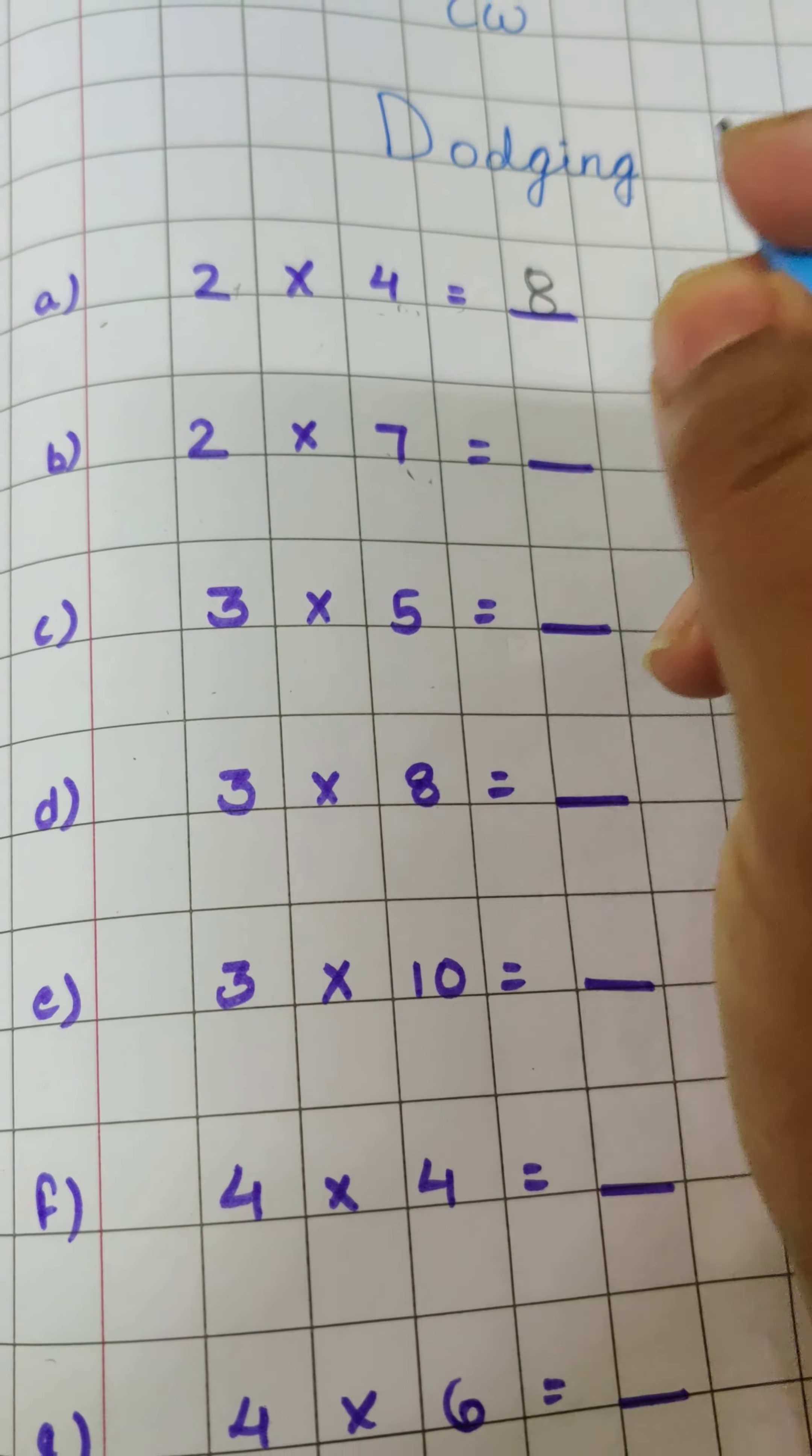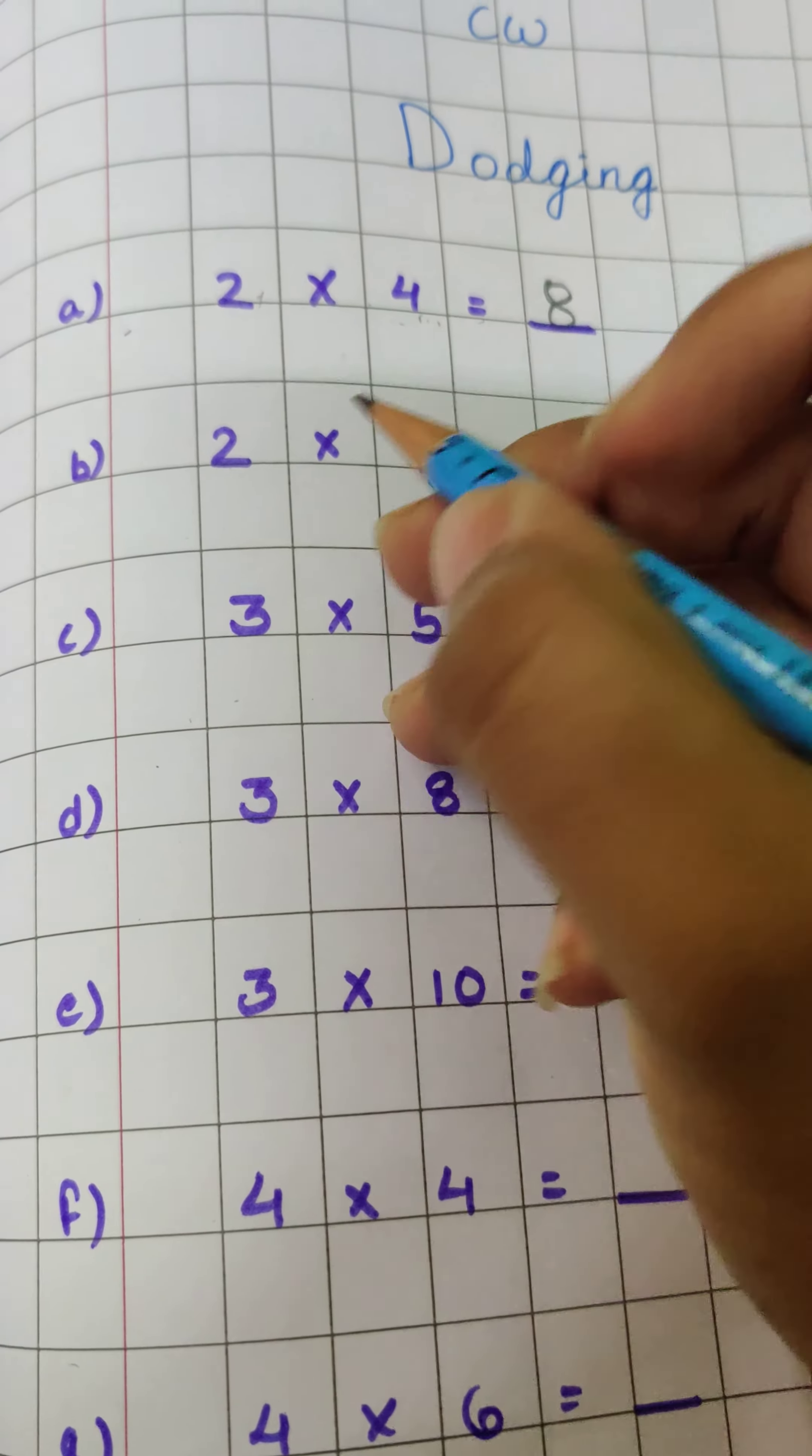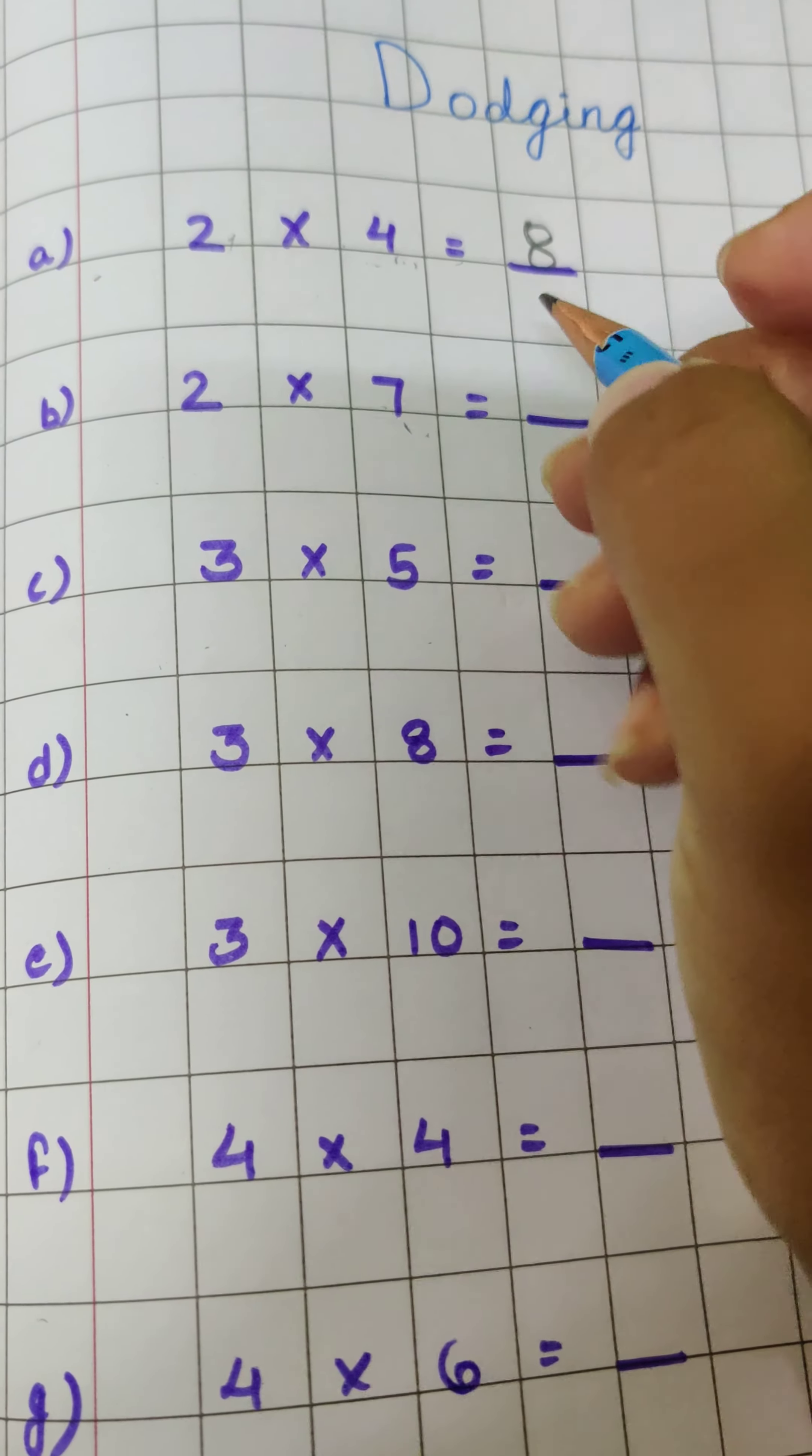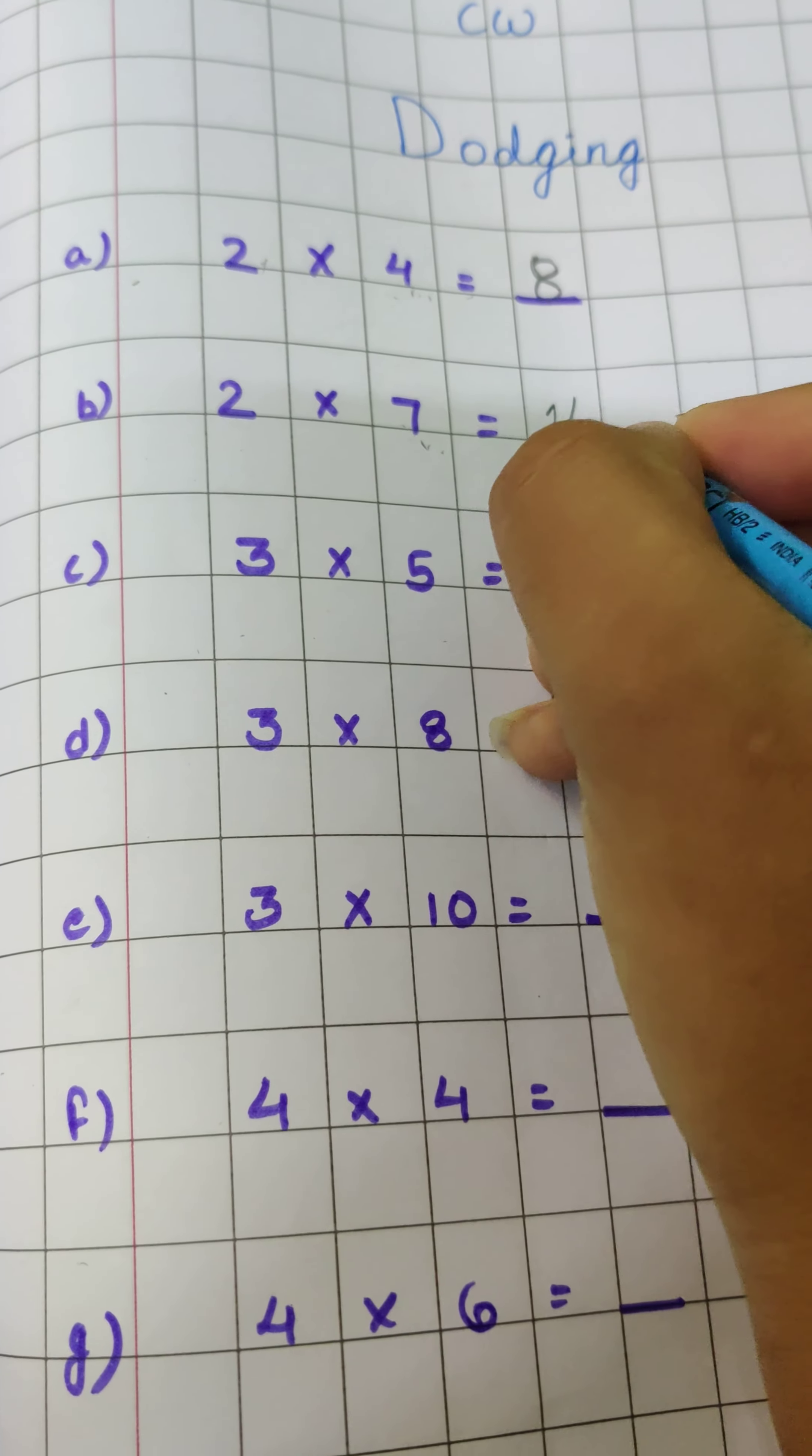Similarly, again 2 sevens are, again we will recite the table 2 up to 2 sevens are. 2 ones are 2, 2 twos are 4, 2 threes are 6, 2 fours are 8, 2 fives are 10, 2 sixes are 12, 2 sevens are 14.